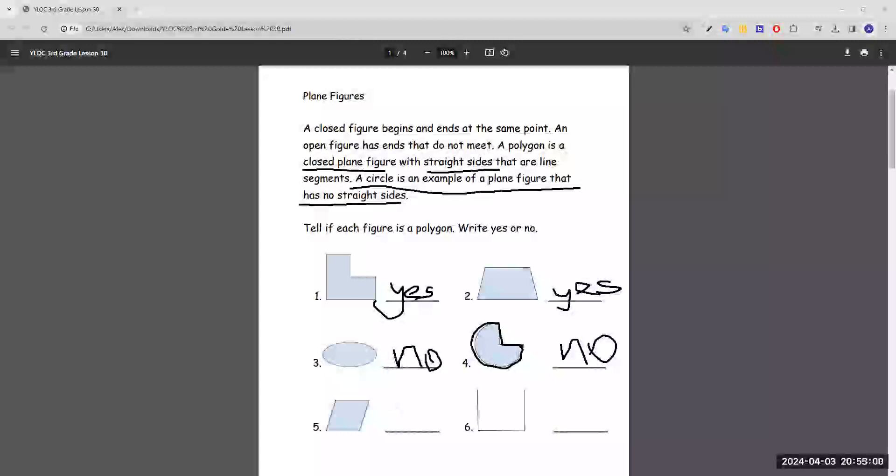Number five is a polygon because same thing as two, the sides are straight. Even if the sides are diagonal, it still counts as straight.